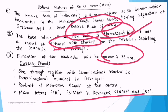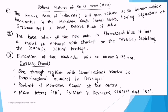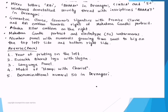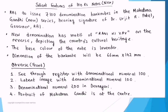On the obverse (front side), there is a see-through register with denomination numeral 50 in Devanagari, portrait of Mahatma Gandhi at center, 'Bharat' in Hindi, 'India,' '50,' and 'RBI.' The guarantee clause, Ashoka Pillar emblem, Mahatma Gandhi portrait, and '50' watermark are present, with the number panel running small to big on the top left and bottom right. On the reverse back side, there is year of printing on the left, Swachh Bharat logo with slogan, language panel, and the motif of Hampi chariot.